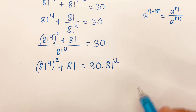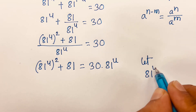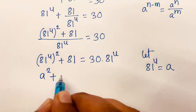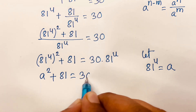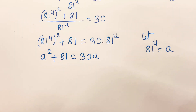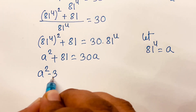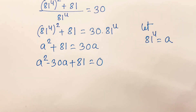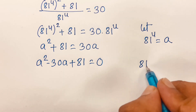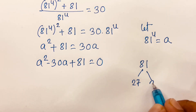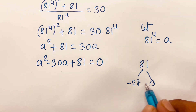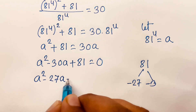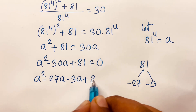Then let 81 power u equal to a. This time I can say a squared plus 81 is equal to 30a. But this equation becomes a squared minus 30a plus 81 is equal to 0. Then for factorization, the middle term: 81 equals 27 times 3, and with the minus sign, it will be minus 27a minus 3a plus 81.